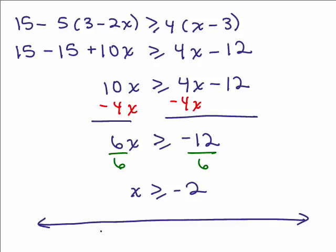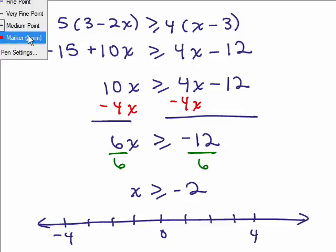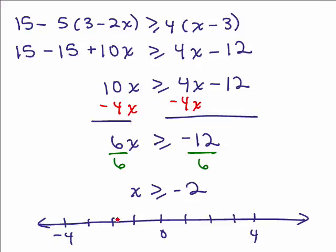Here's 0, negative 4, positive 4. x is greater than or equal to negative 2, so that means it could be equal to negative 2, so we put a dot on negative 2, and also all the numbers to the right of negative 2 should be solutions. There's infinitely many solutions.